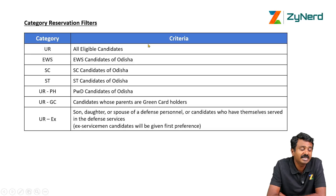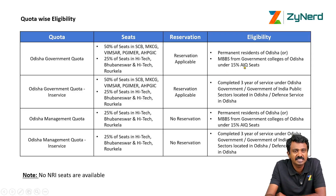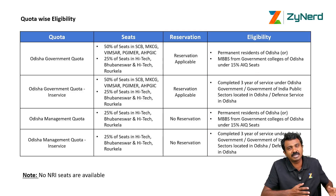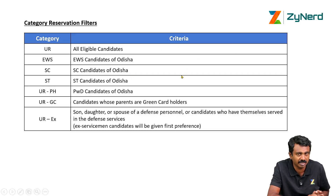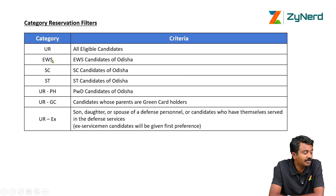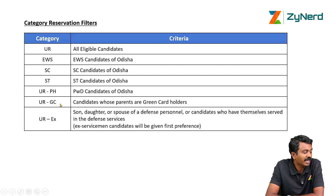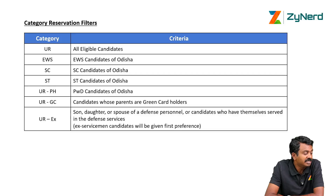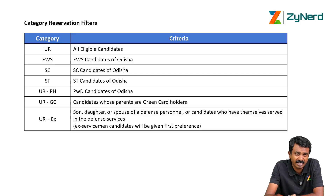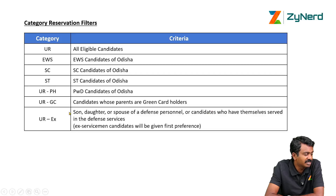Now we come to category — who is eligible for reservation. Every candidate is eligible for UR. If you are an MBBS from Karnataka or any other state and did MBBS in Odisha under 15% AAQ, and you have a Karnataka SC/ST reservation certificate, you are not eligible for SC/ST in the Odisha counseling — you are only eligible for UR here. You can claim that reservation in all-India counseling or Karnataka counseling. PH is for PWD candidates, who have reservation. GC is for green card holders of Odisha.